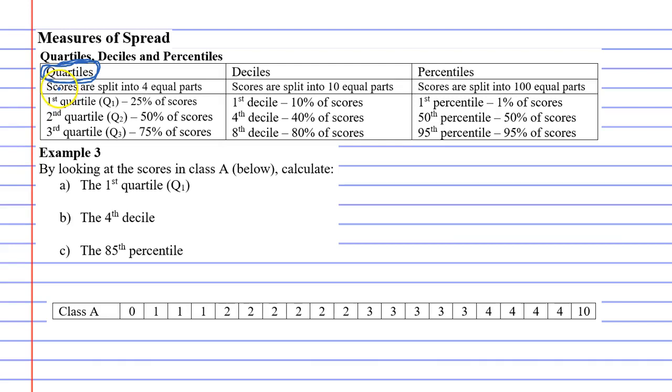You'll notice here it says for quartiles scores are split into four equal parts. Now below we have class A and if we were to split this into four equal parts we would put the line here, here and here.